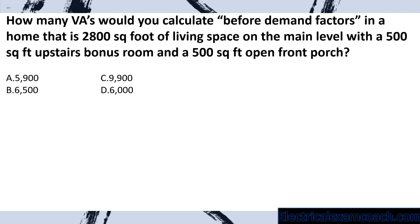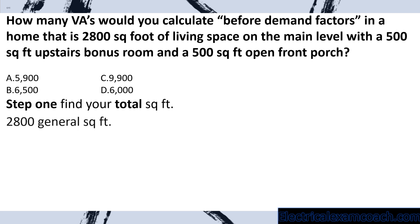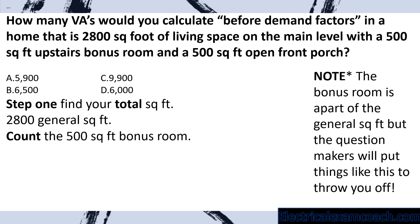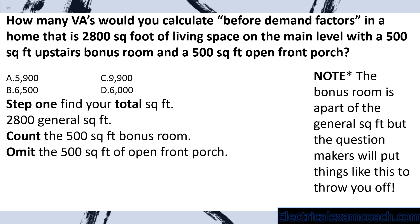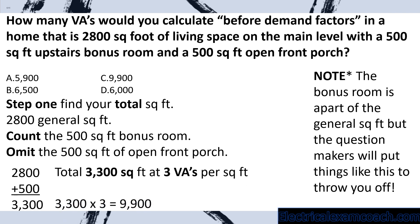Practice problem 2: how many VAs would you calculate before demand factors in a home with 2,800 square feet of living space, a 500 square foot upstairs bonus room, and 500 square feet of open front porch? First, total the square feet. We count the 2,800 general area and also the 500 square foot bonus room — note that test makers include items like bonus rooms to throw you off, but they count as general square footage. We omit the open porch. The total is 3,300 square feet. Multiplied by three VAs per square foot, we select answer C.